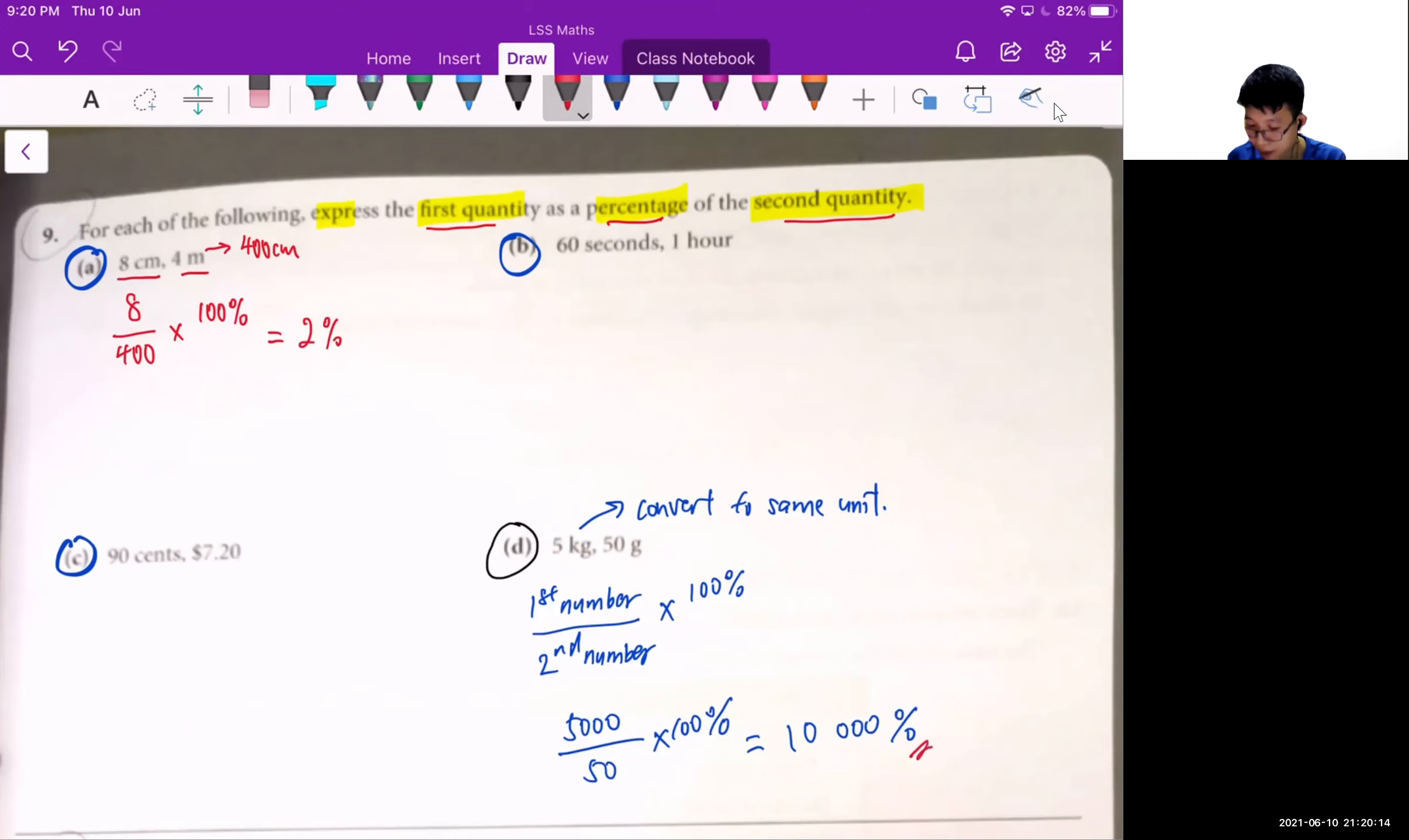So for the rest, this one will be 10,000%, because this time round, I'm using a bigger number over a smaller number. So be expected to see that the percentage will be much higher than 100%. So let me work out the rest for you, then check your answers.